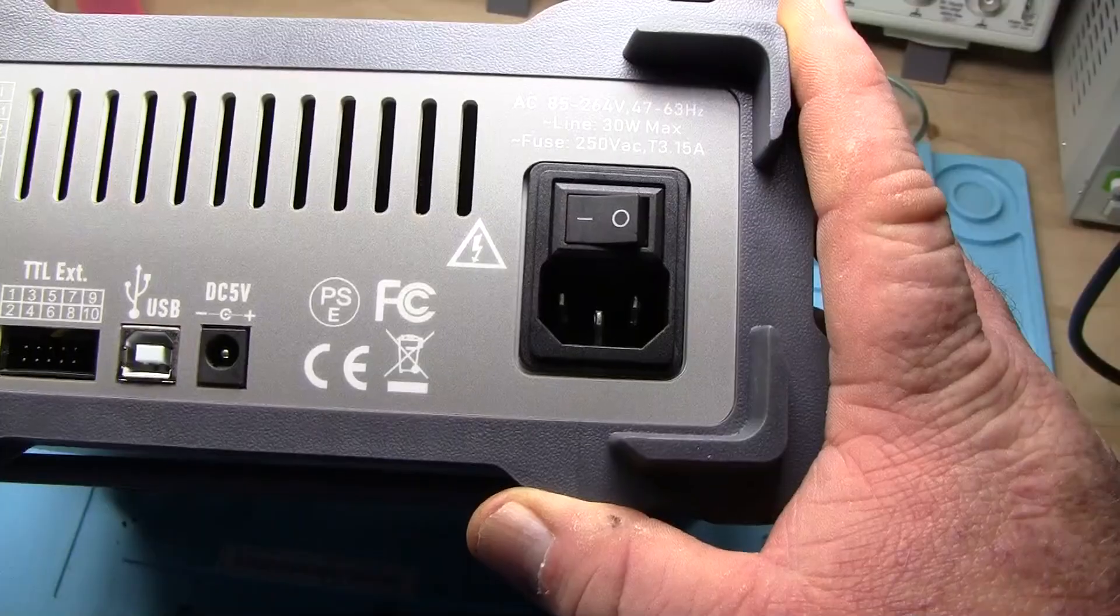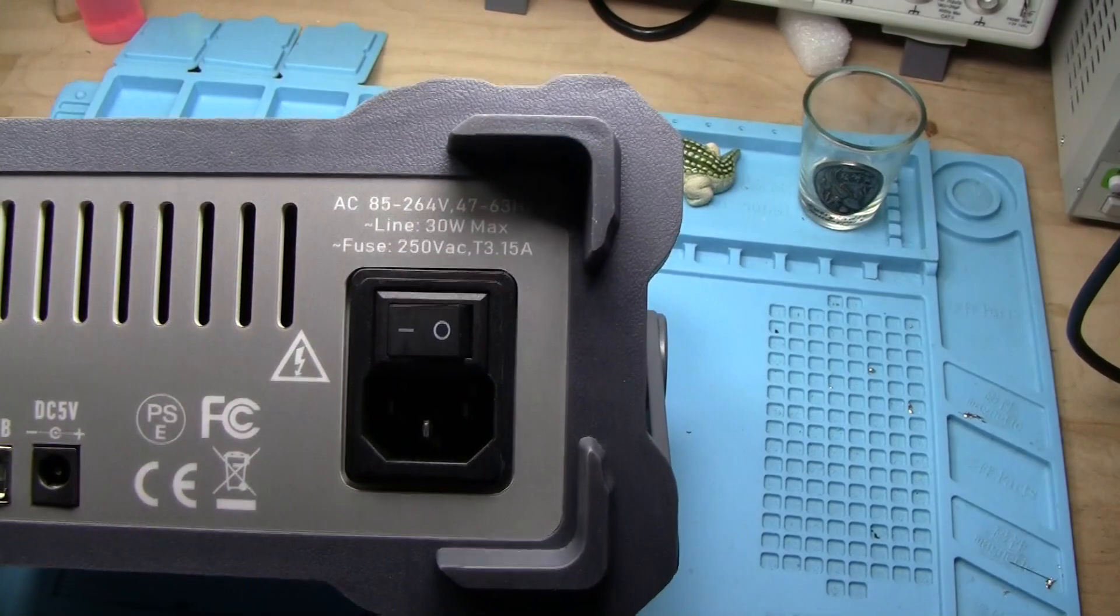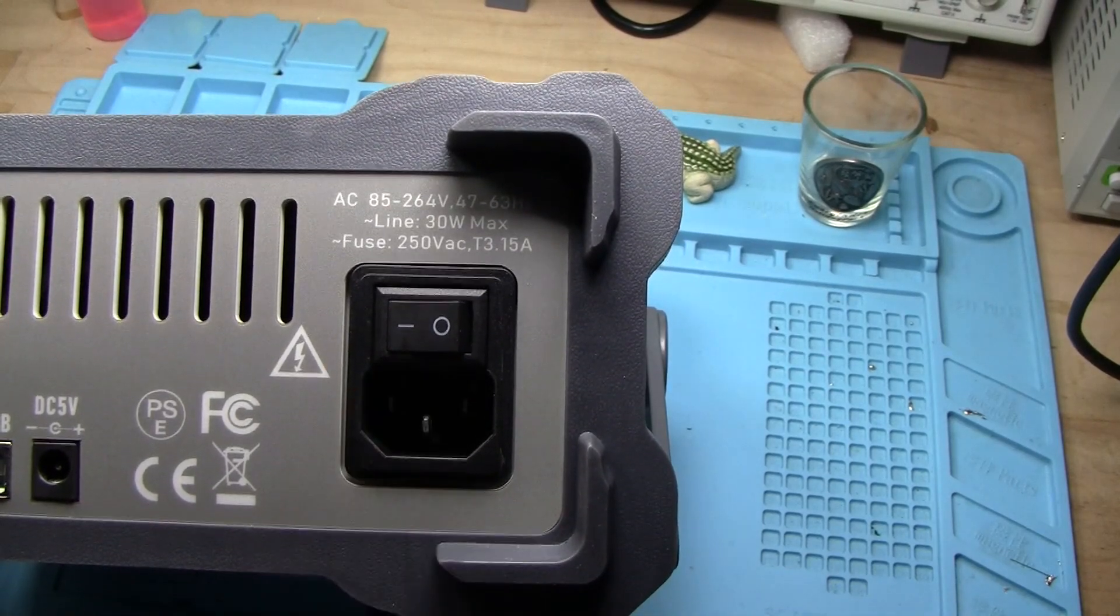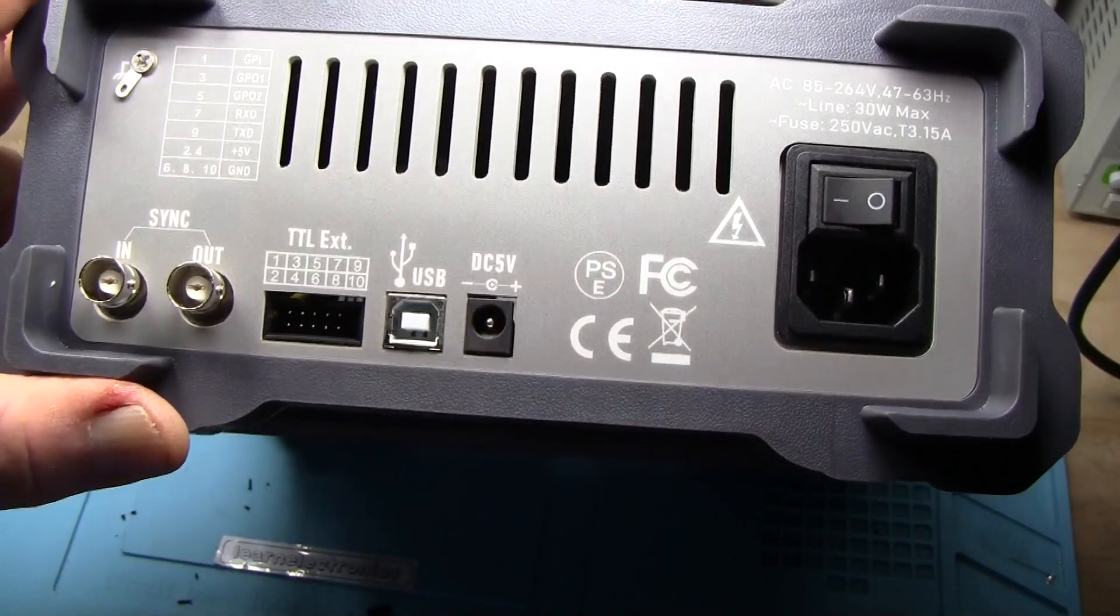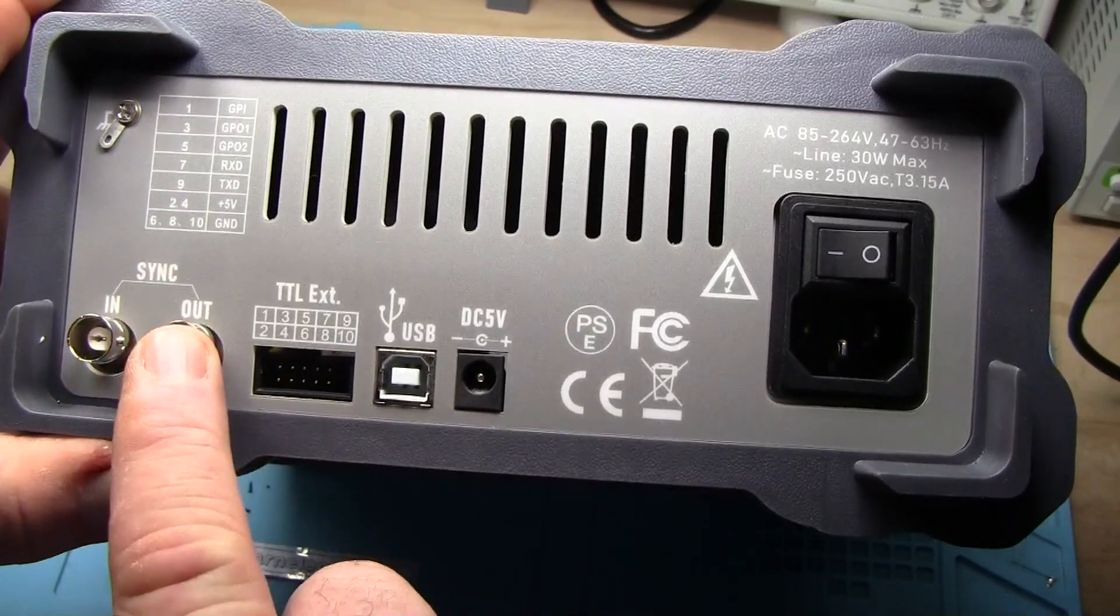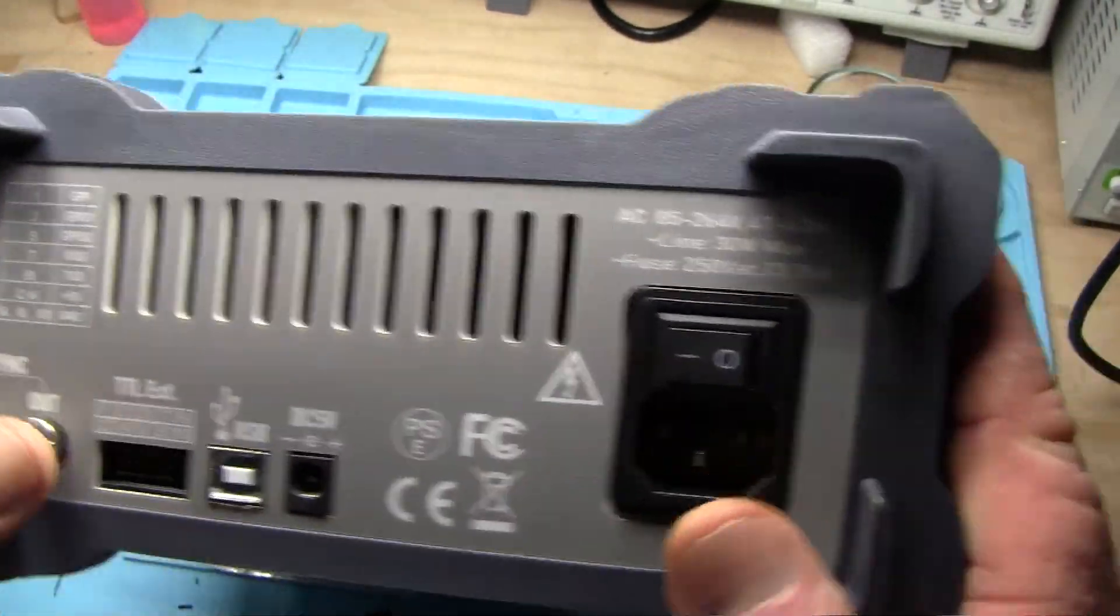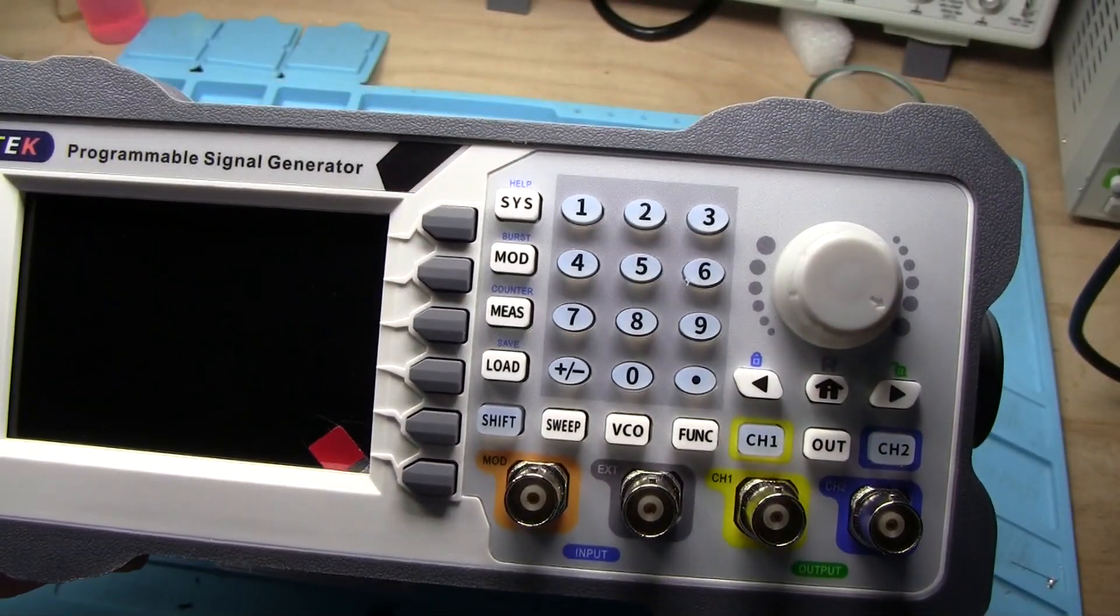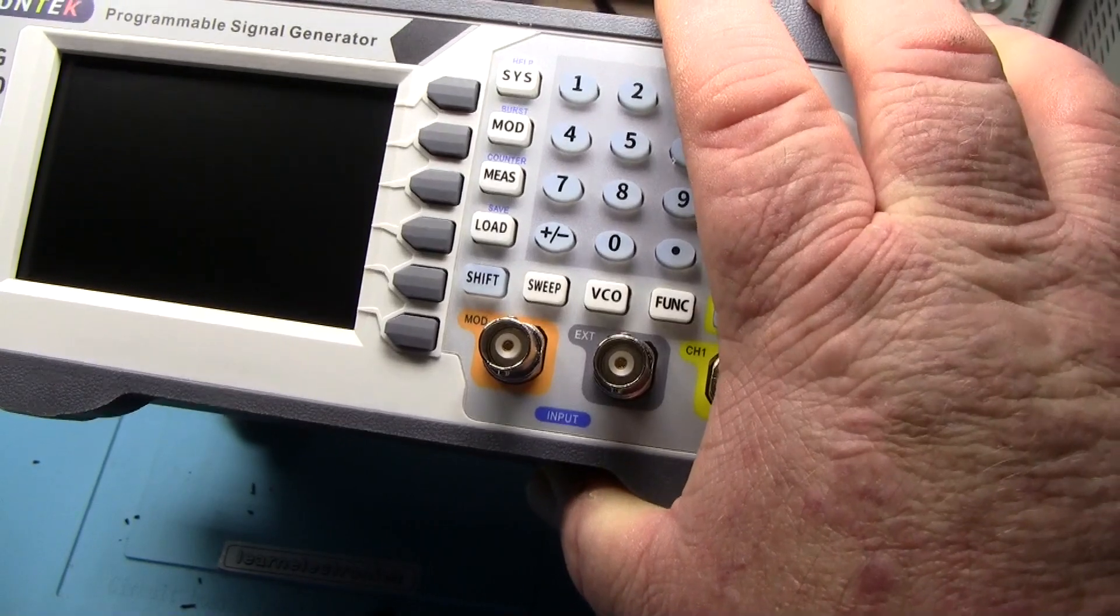Taking a look at the back of it here, you can see we have AC 85 to 264 volts, 47 to 63 hertz. It's got a 250 volt AC fuse in it. It's also got a plus 5 volt DC input, which is interesting. USB, TTL output, sync in, sync out, and GPIO. Also has a grounding strap. This weighs nothing, it is super light.